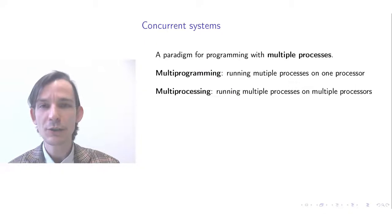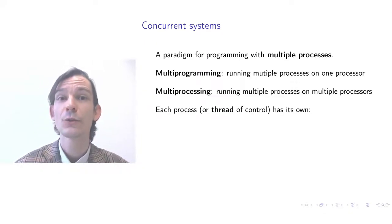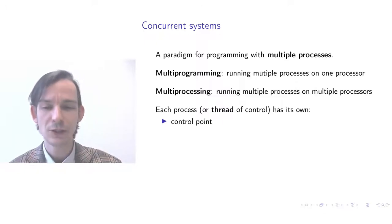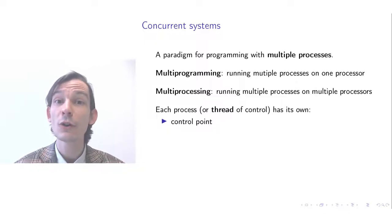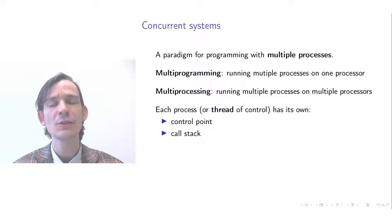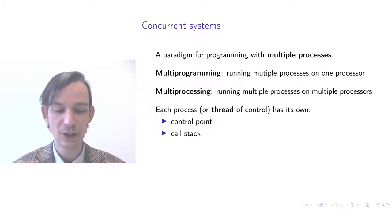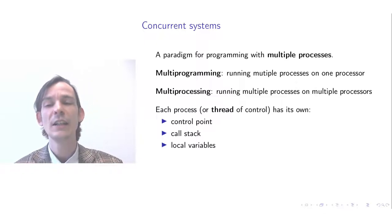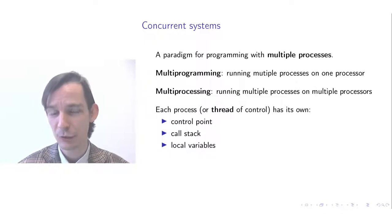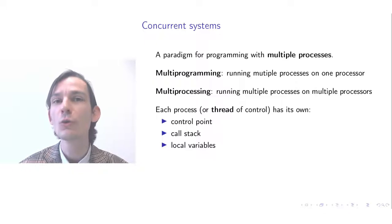So what is a process? You can think of a process — also called a thread of control — as having its own control point, meaning its position in the program. Each process has its own call stack, so whenever it calls procedures these are done within the context of a single process. And each process maintains values of its own local variables.